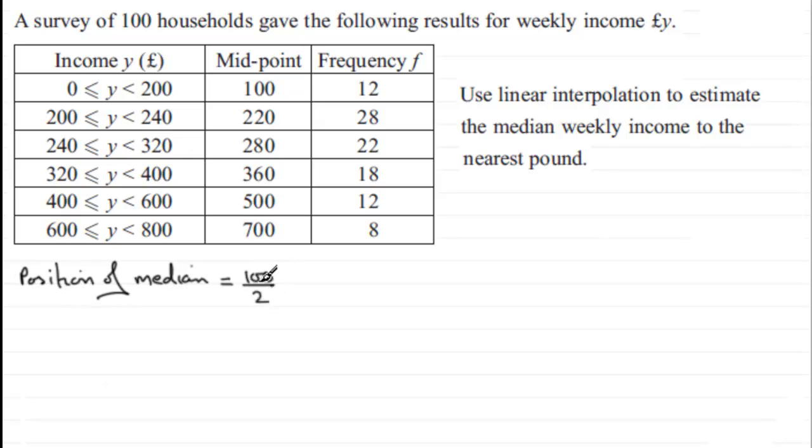You only add one to the amount of values and then divide by two when you've got discrete data. So for continuous data this is now going to be the 50th value that we're going to be looking at for the median. And where is that 50th value? Well, if we add up down through the column here, 12 and 28, you'll find that that total there comes to 40.